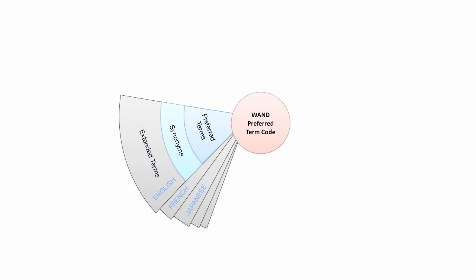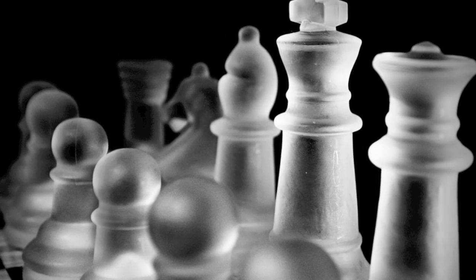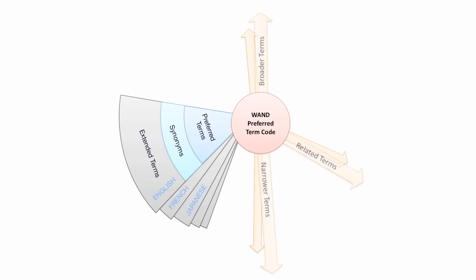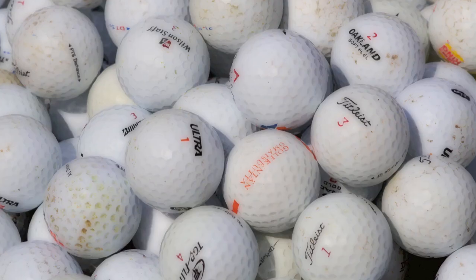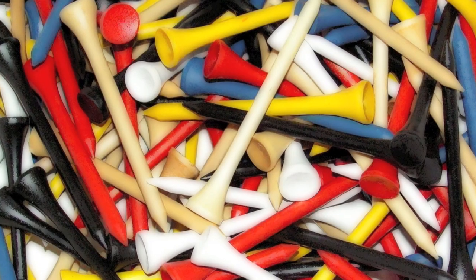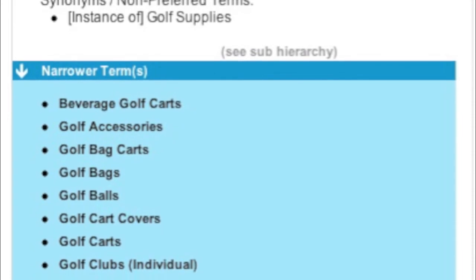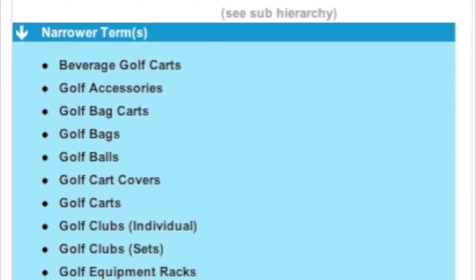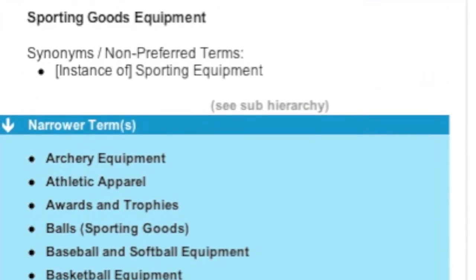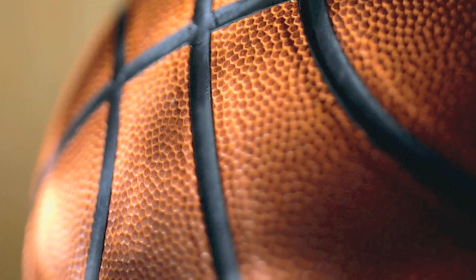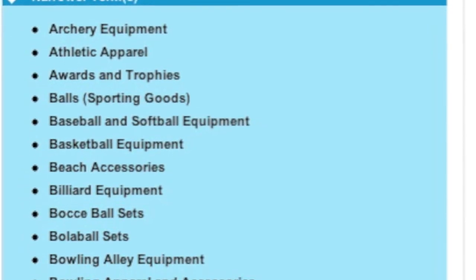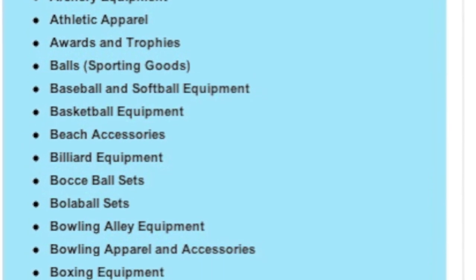A taxonomy is a hierarchy. Remember geography: broader terms are countries and continents, narrower terms are states and cities. Think of the preferred term 'golf equipment' — broader terms would be sporting goods equipment, and narrower terms to golf equipment would be golf balls and golf clubs. Similarly, narrower terms to sporting goods equipment include cycling equipment, football equipment, and basketball equipment. This taxonomy describes the domain of sporting goods equipment.